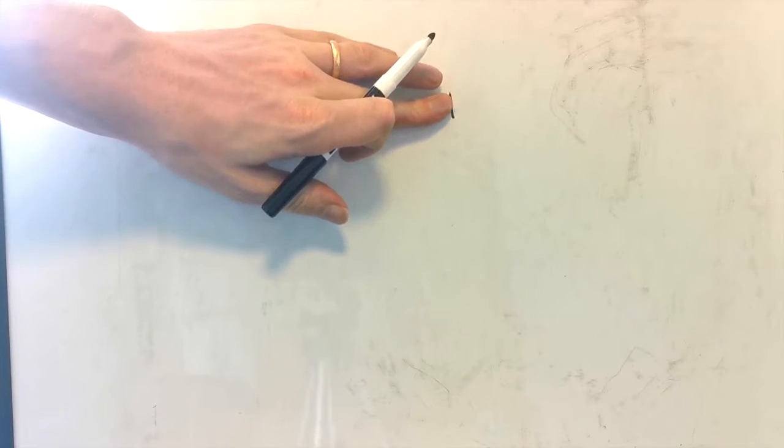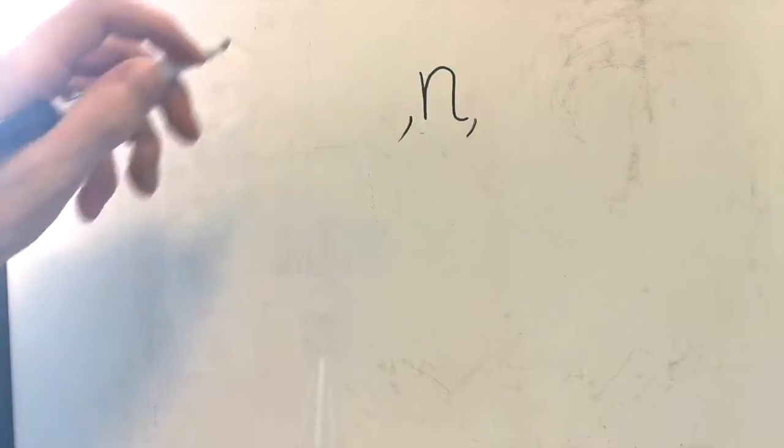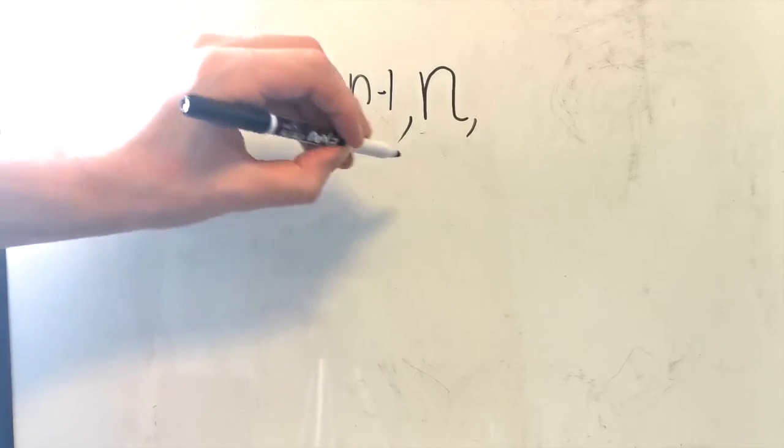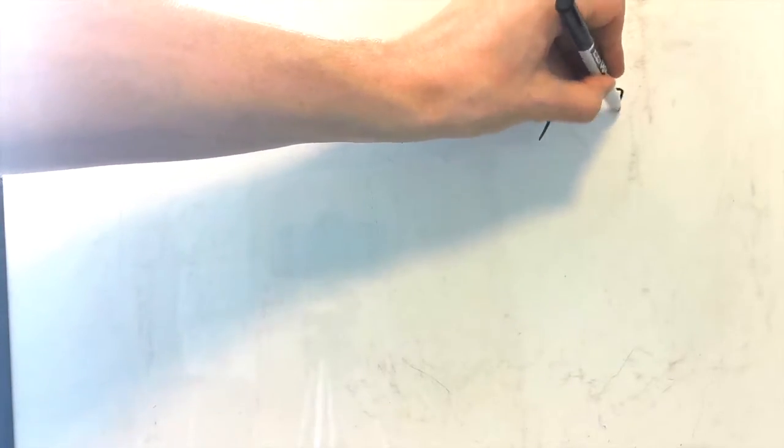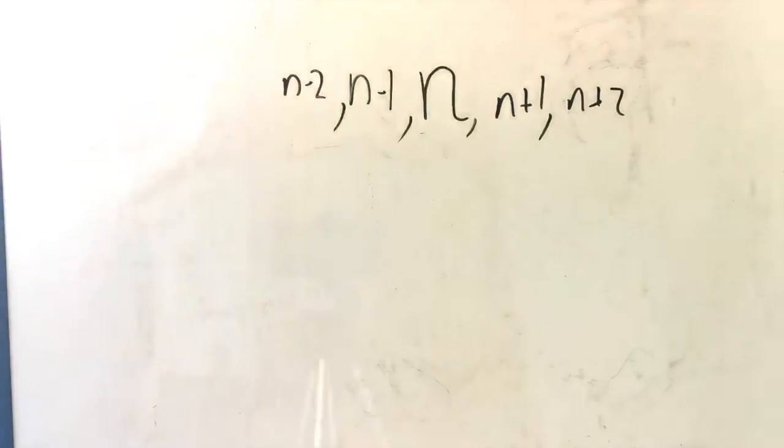I will show you one other trick with summing consecutive numbers. Sometimes, it's not the best idea to call the very first number n. Sometimes we can call the middle number itself n. Let's say we want to add up five consecutive numbers. You might actually want to call the middle number n. You want to call this one n minus 1, n minus 2. This one becomes n plus 1, n plus 2. So as opposed to starting at n, you actually put the middle one. Stop and think about why this might be useful.